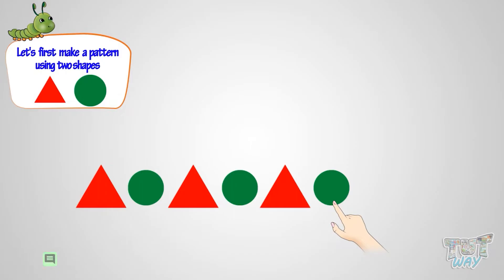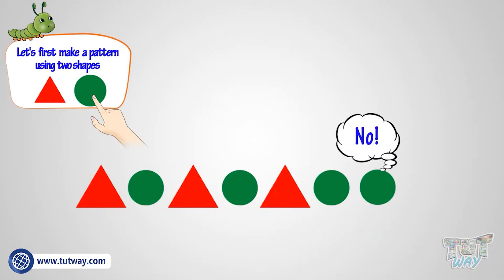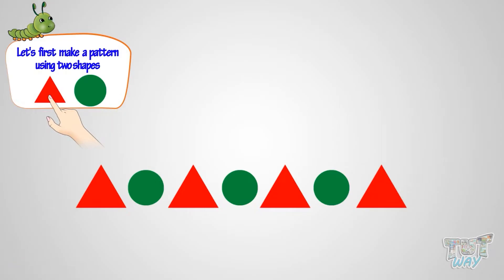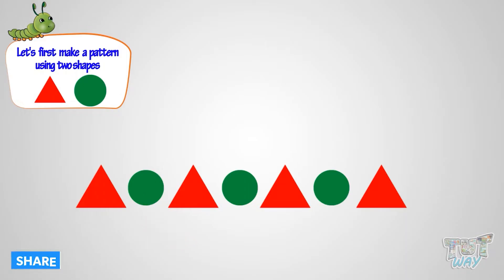I want to continue. Which shape to use next? Circle? No! It seems to be in the wrong order. I should use a triangle. Now everything seems to be in order, as the pattern we are repeating here is a triangle, then a circle. Such a repeated pattern is called a core pattern.